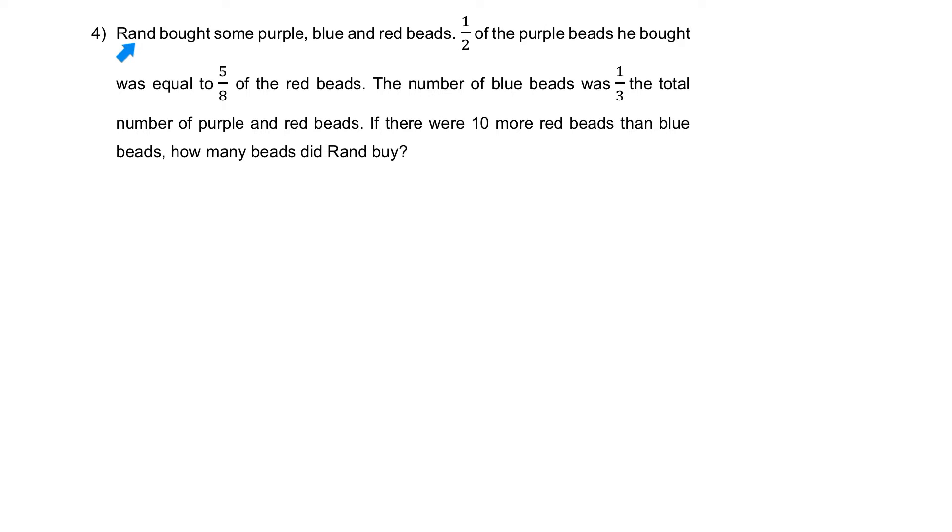Question 4. Ren bought some purple, blue and red beads. Half of the purple beads he bought was equal to five-eighths of the red beads. The number of blue beads was one-third the total number of purple and red beads. If there were 10 more red beads than blue beads, how many beads did Ren buy?